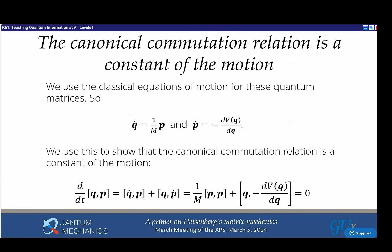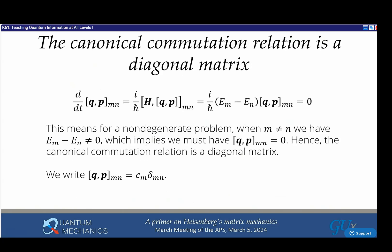We can use the equation of motion for momentum to show there's no time dependence to this commutator between q and p. If I distribute that derivative and substitute q-dot proportional to p and p-dot proportional to dV/dq, I get a commutator of p with p and q with a function of q. Both those commutators are zero. So the canonical commutation relation is independent of time.